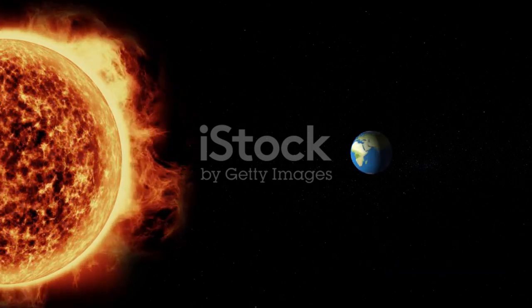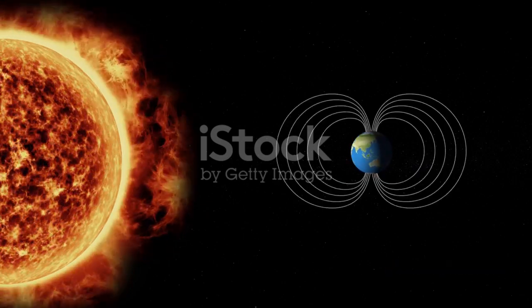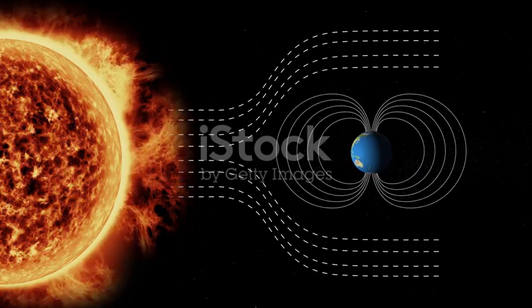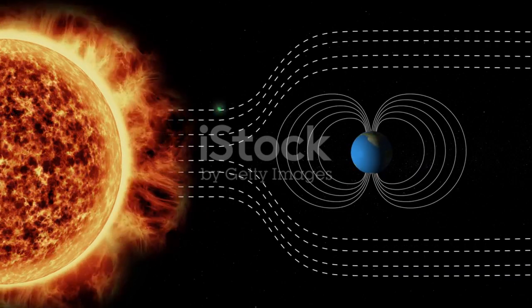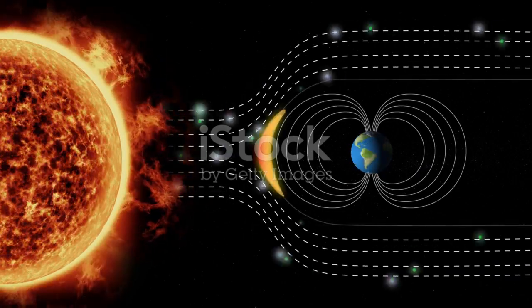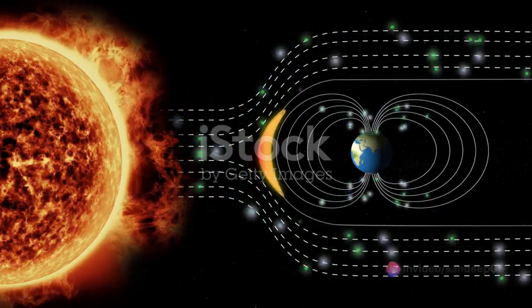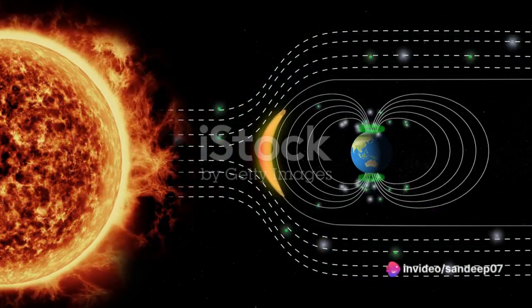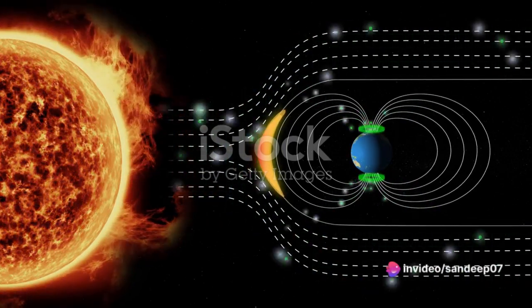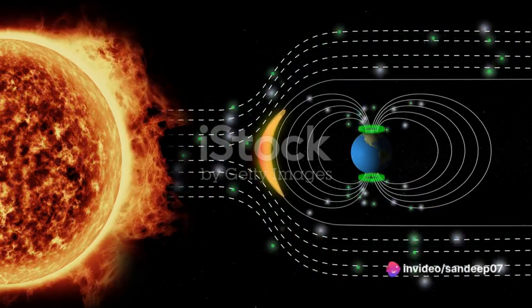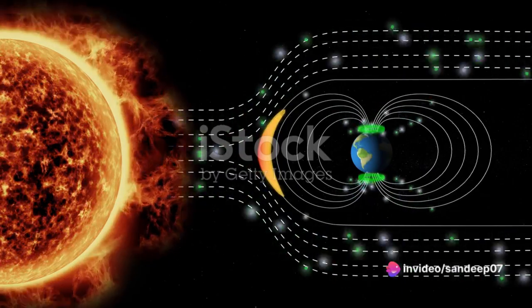These storms catapult a sea of charged particles, or plasma, into space. This plasma, carried by the solar wind, embarks on a journey that can lead it towards Earth.